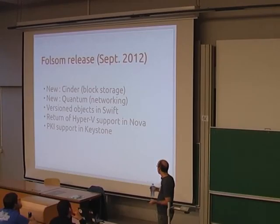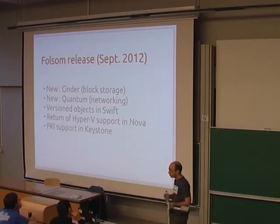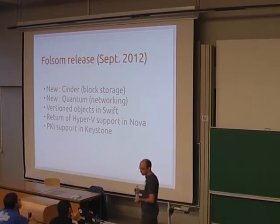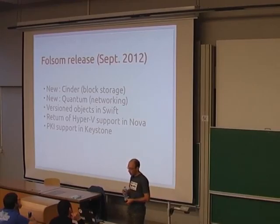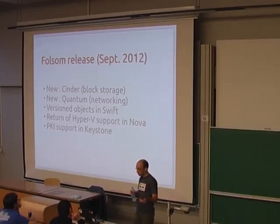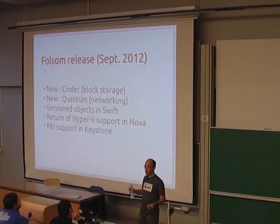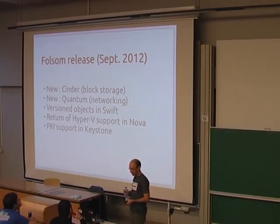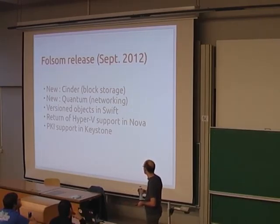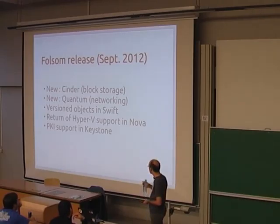There are too many features to make a complete selection so I picked three at random: virtual objects in Swift, the return of Hyper-V support in Nova, and support for PKI tokens in Keystone.